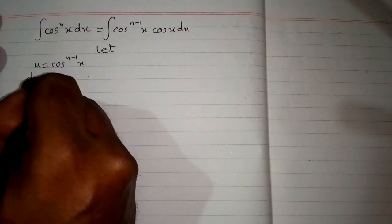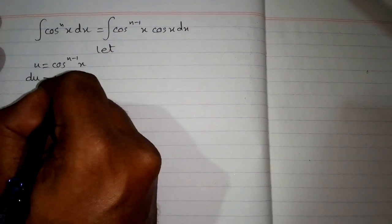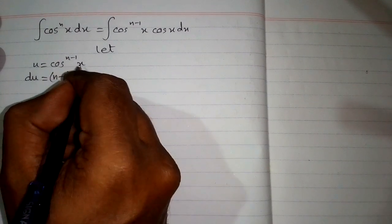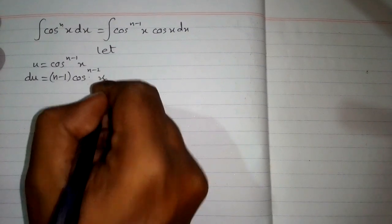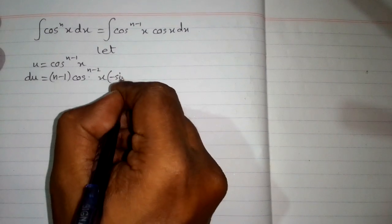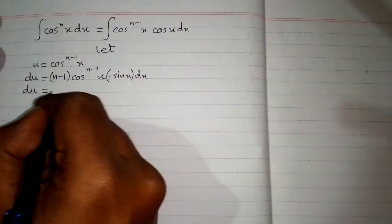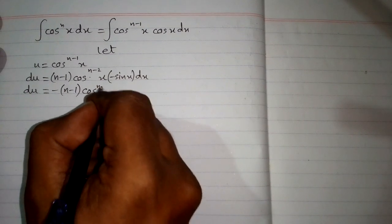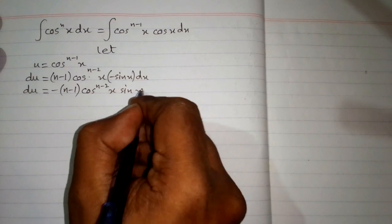The differential du is equal to the derivative of cosine raised to the power n minus 1, which gives us n minus 1 times cosine of x raised to the power n minus 2, multiplied by the derivative of cosine x, which is minus sine x dx. So we can write du as minus (n minus 1) cosine raised to the power n minus 2 of x, multiplied by sine x dx.